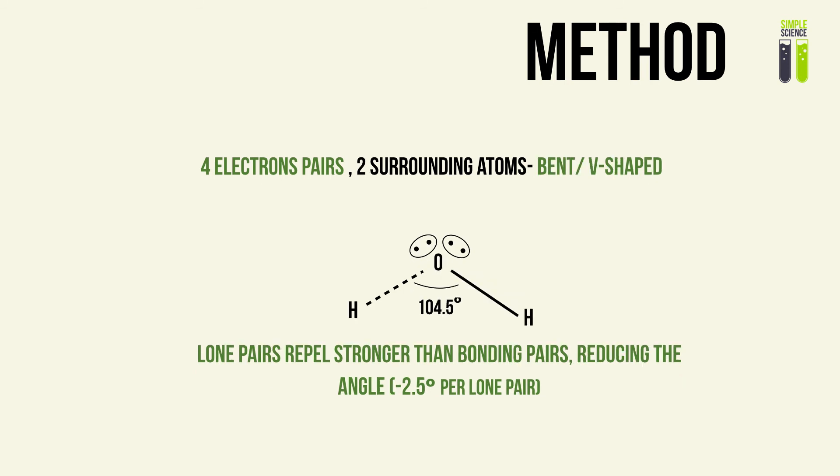In the next case, when we have two lone pairs, the bond angle will reduce by another 2.5 degrees, so we end up with a bonding angle of 104.5 degrees. This shape is a planar shape because there are three atoms joined amongst each other, forming a V-shape, also known as a linear bent shape. This bond angle of 104.5 degrees results from the two lone pairs of electrons.